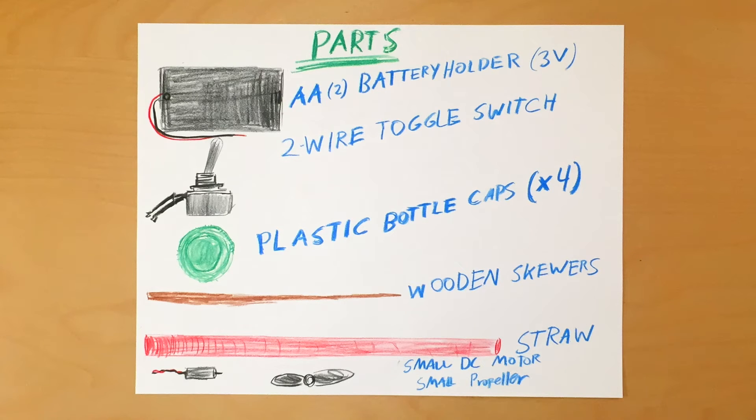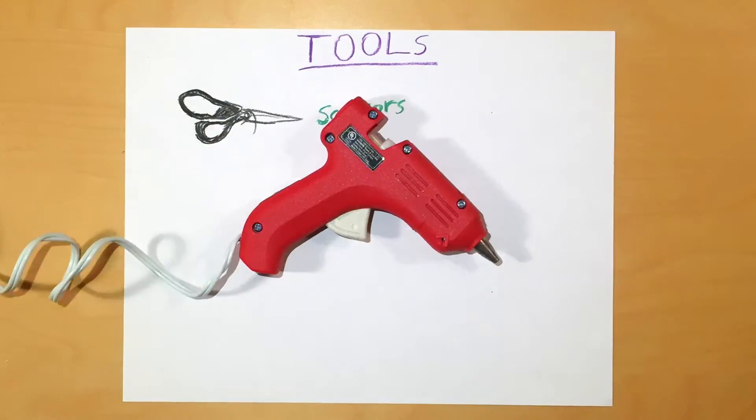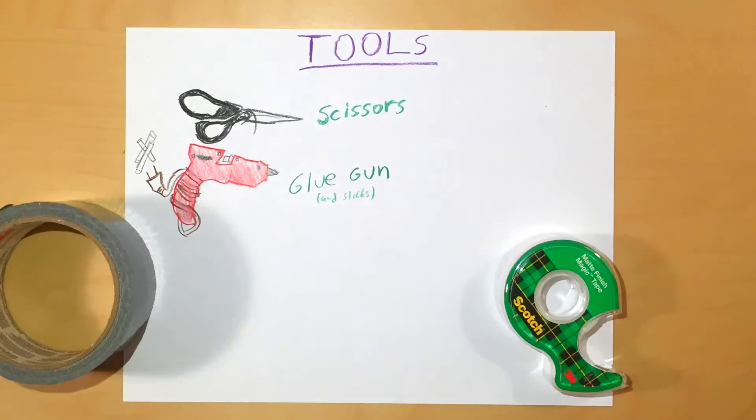I'll include links in the description for the propeller and the motor because they're kind of hard to find in stores. The tools you'll need are a pair of scissors, glue gun, tape, and wire strippers.